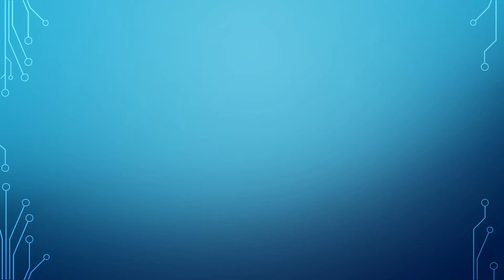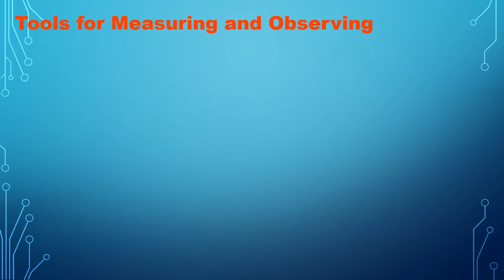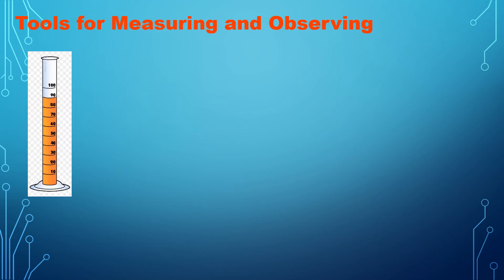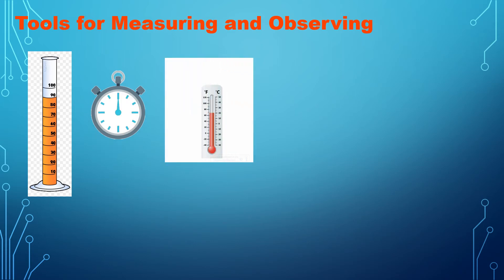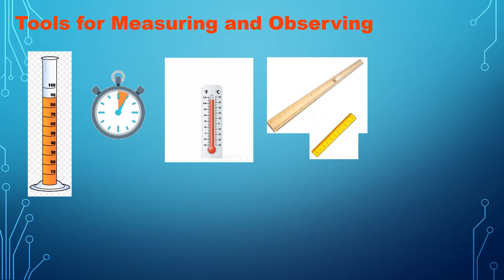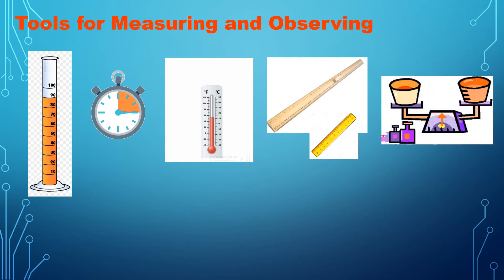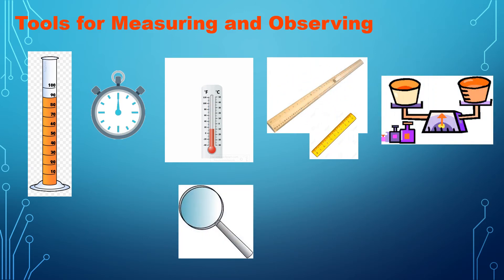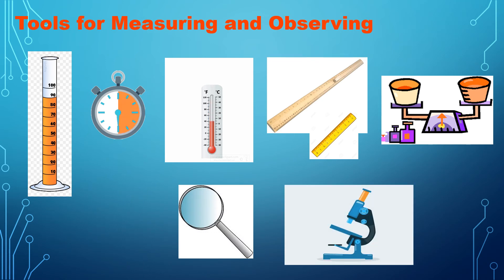Now let's recap. What are the tools for measuring and observing? Graduated cylinder, clock and stopwatch, thermometer, ruler and meter stick, balance, hand lens, and microscope.